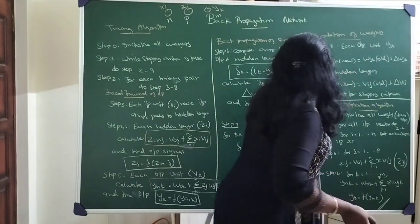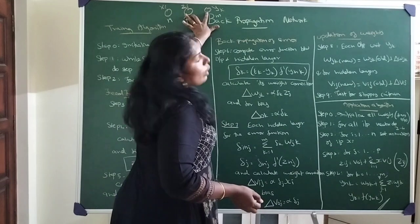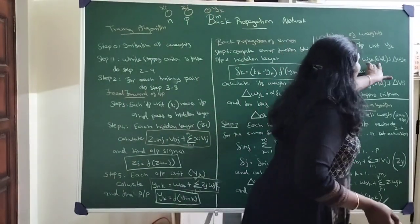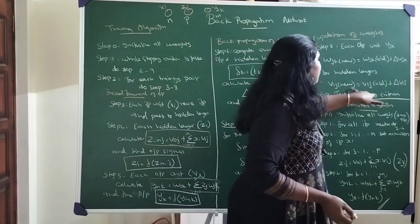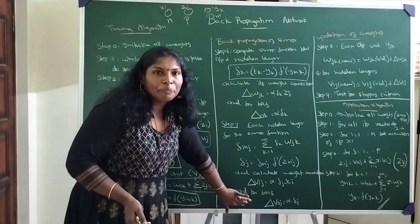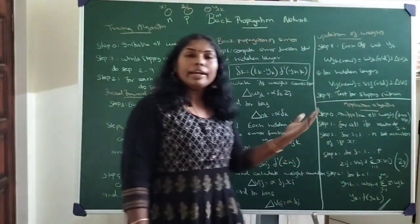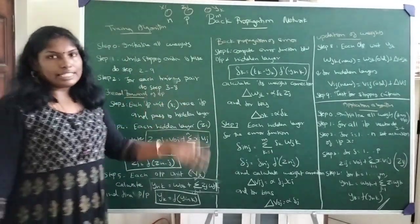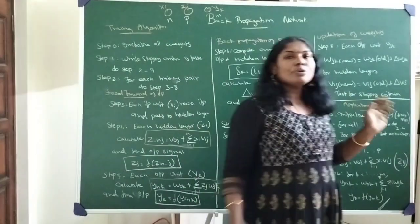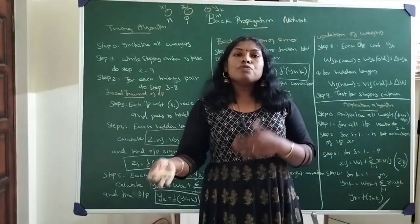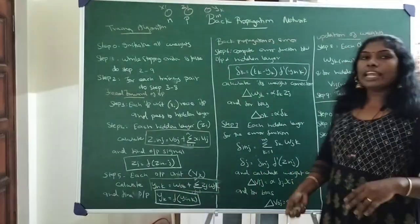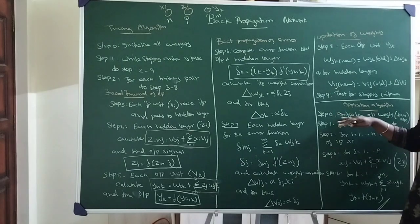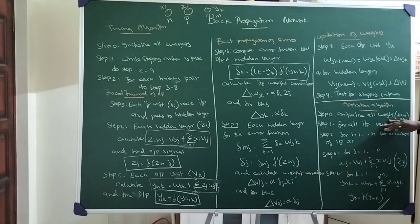For weight updation, since the corrections have already been calculated, we update: w_jk_new equals w_jk_old plus the correction delta_w_jk between the hidden and output layers, and v_ij_new equals v_ij_old plus the adjustment delta_v_ij between the hidden and input layers. This process is repeated until the stopping criteria — usually the number of iterations specified by the user — is met. This is the training algorithm. After training, we use the application algorithm to test in real-time.